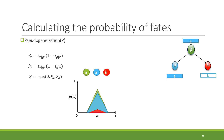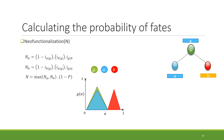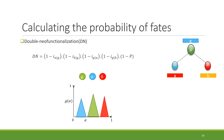For pseudogenization, gene B loses its function and its expression level decreases, so the percentage area of g covered by B is close to zero — we infer this as pseudogenization. For neofunctionalization, B finds a new function, so the percentage area of B covered by g is zero. For double neofunctionalization, both A and B find new functions, so all i-values are zero.